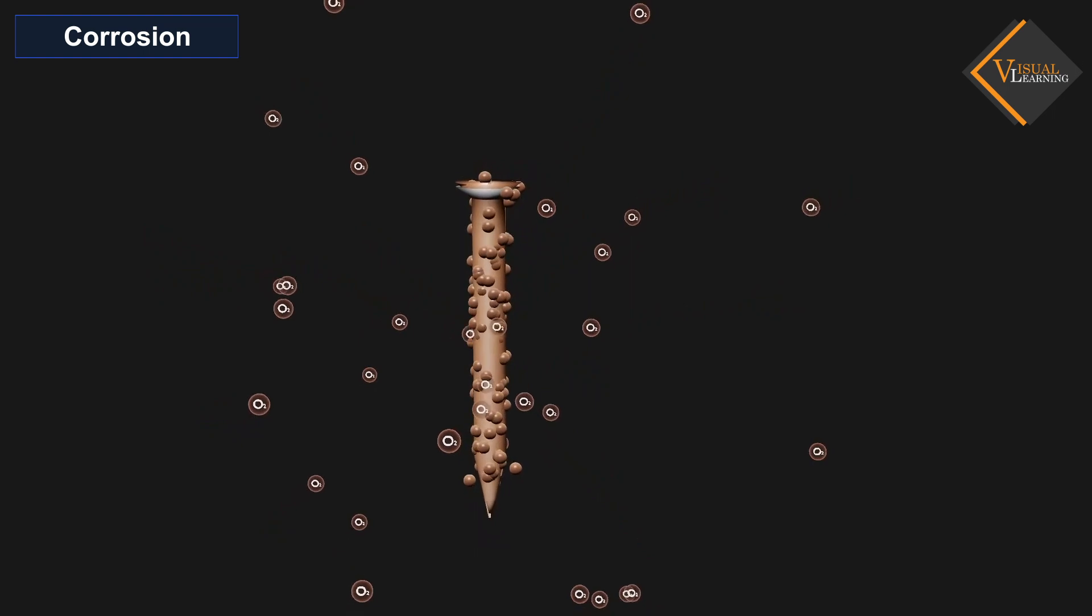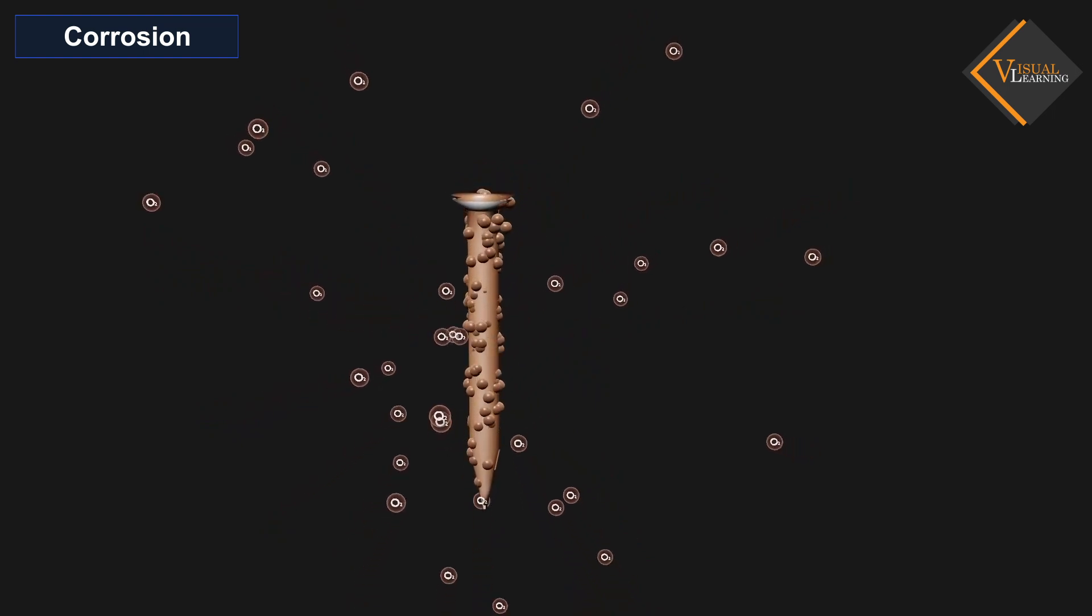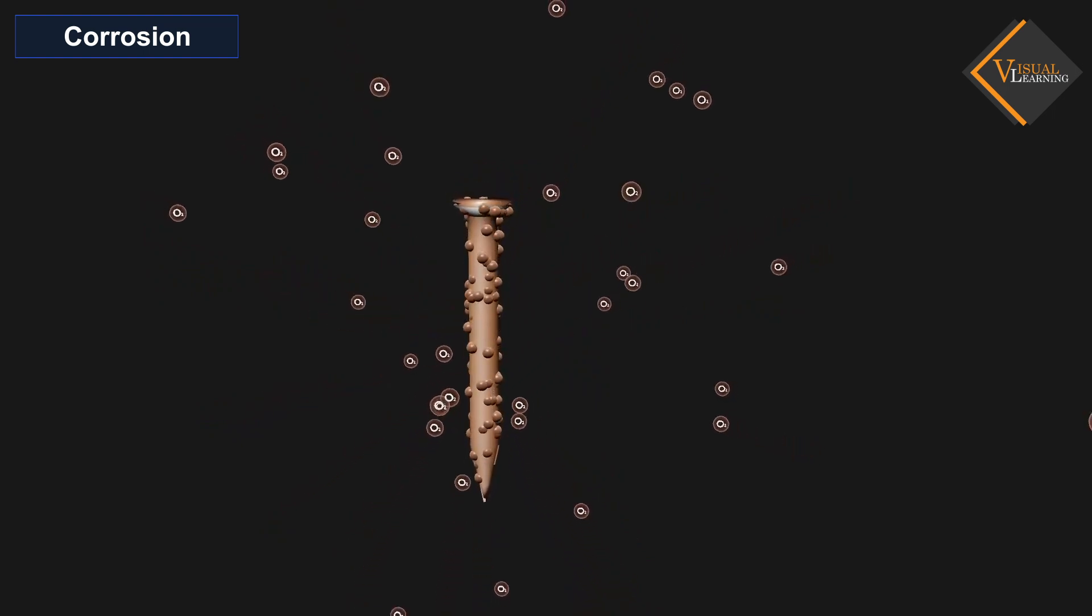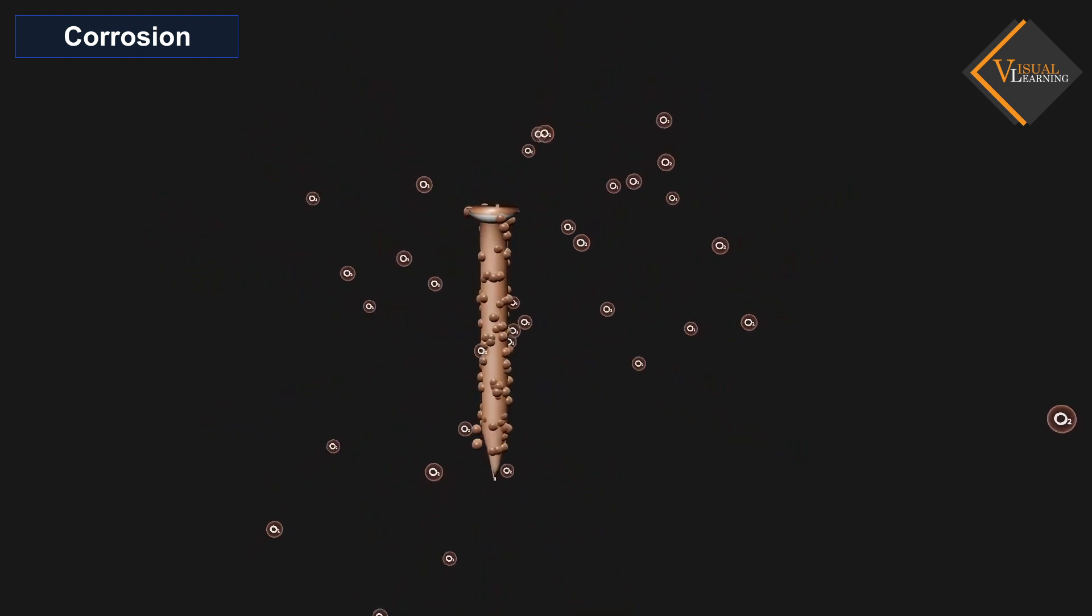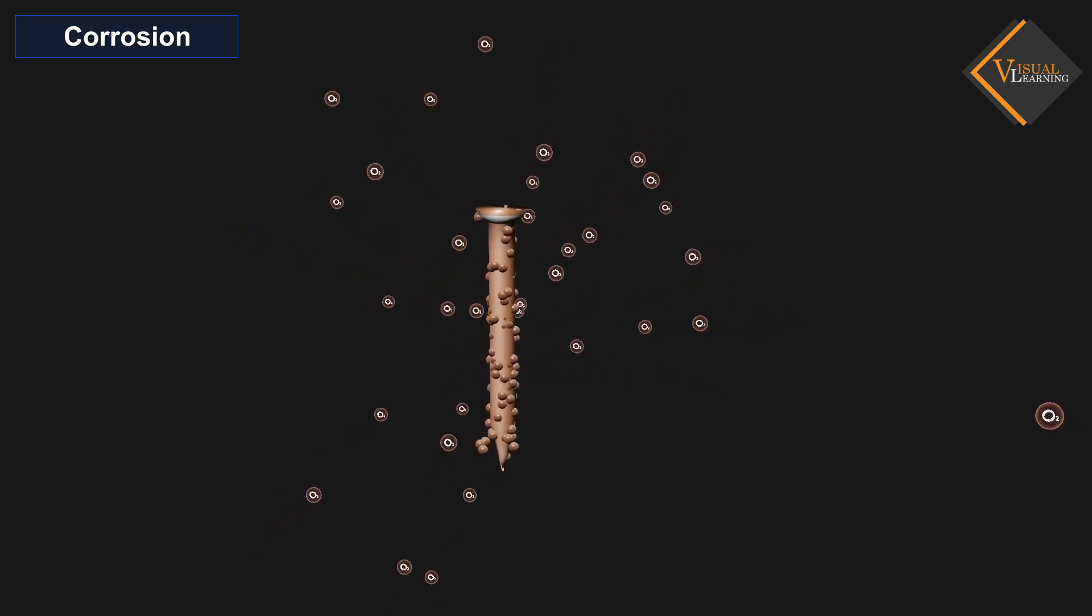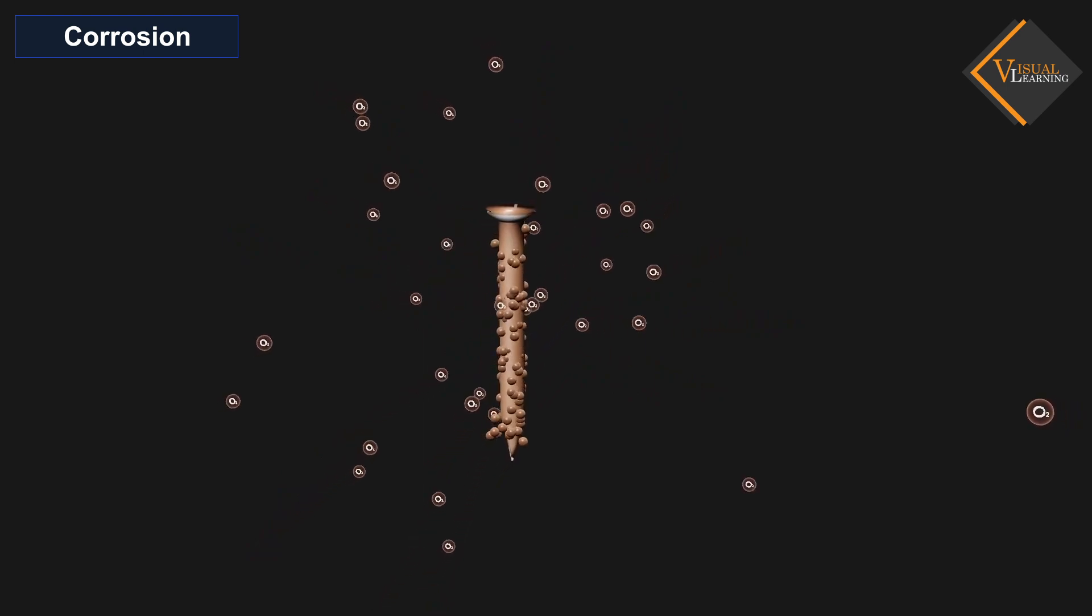If we look at the science behind corrosion, we can say that it is a spontaneous irreversible process wherein the metals turn into much more stable chemical compounds like oxides, sulfides, hydroxides, etc.